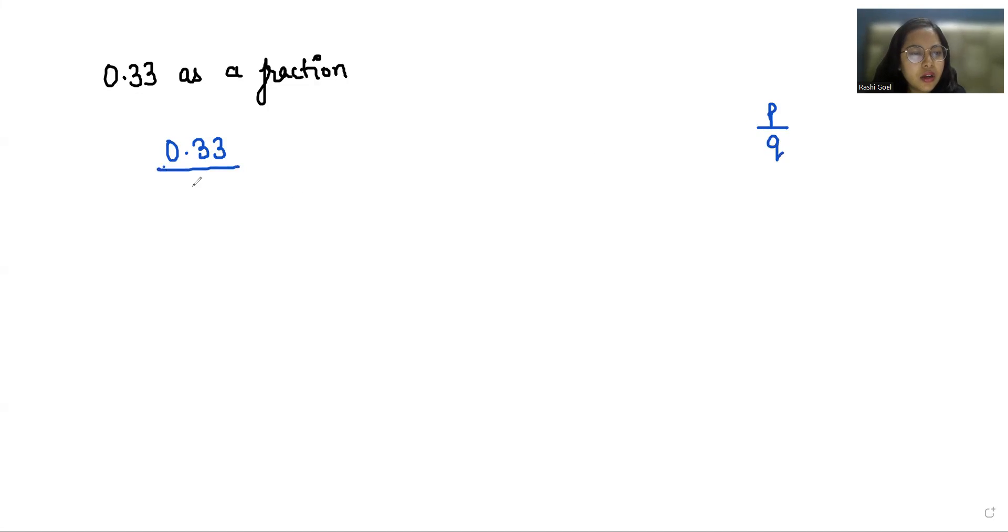So we can consider here in the denominator one. Now I'm going to multiply with the number of tens as the decimal digits. So there are two digits after the decimal. I'm going to multiply with two times ten in the numerator as well as in the denominator.